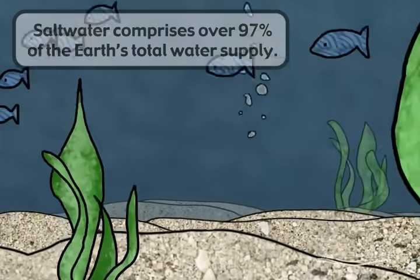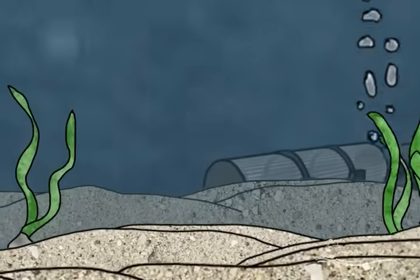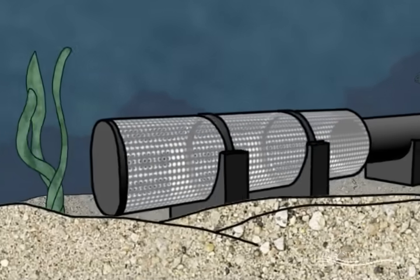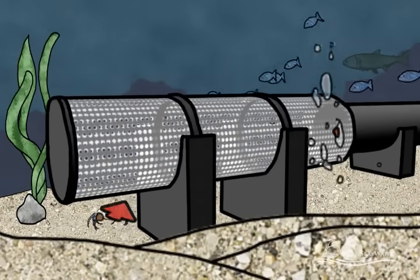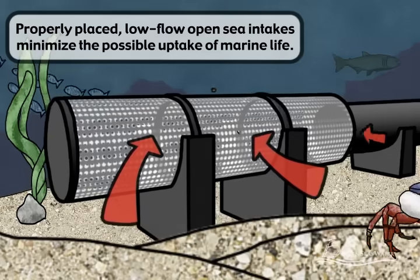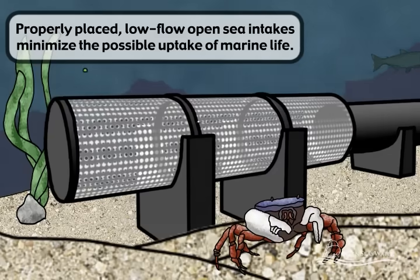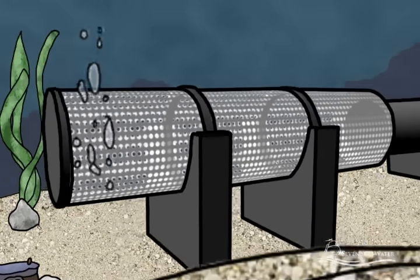Seawater can be economically and reliably converted to potable water through a process known as seawater reverse osmosis. The process starts by extracting water from the ocean using wells located on the shoreline or by using an intake structure located in the open ocean.